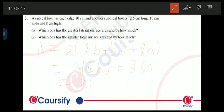This equals to 2 times 12.5 into 10 plus 360. This will equal to 610 centimeter square. So total area of cuboidal is 610 centimeter square. Let's find out about the cubical box.